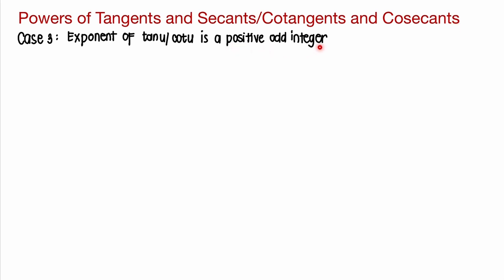So this time, we'll be focusing on the positive odd integer of tangents or cotangents. Last time, we evaluated the integral of tangent to the power of 5x times secant to the power of 4x dx. What we did there was factor out secant squared x and express all other parts of the integrand as tangent, so that we could perform integration by substitution with du equal to secant squared x.